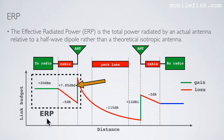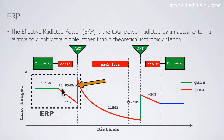If we want to calculate the ERP value, then we only focus on these three values: the transmission power, the antenna gain, and the cable loss. Please note, if we want to calculate the ERP value, the antenna gain must be expressed in the unit dBd. In this example, the ERP value is 20 plus 7.85 minus 5 equals 22.85 dBm.